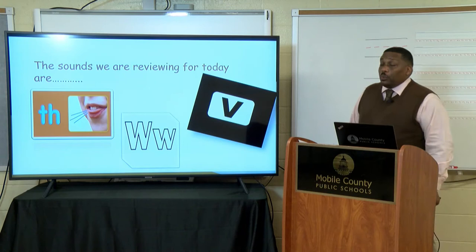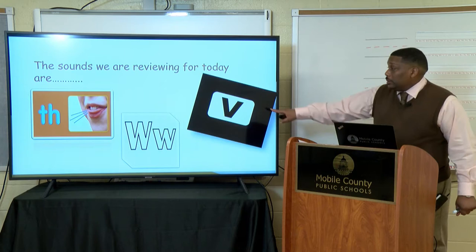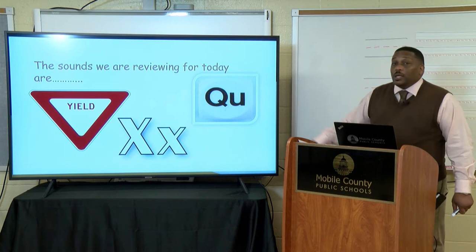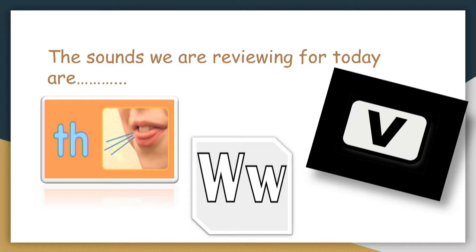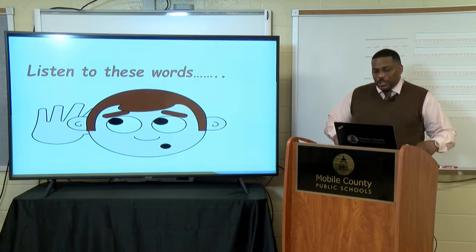The sounds we're reviewing today are: F — voiced and unvoiced — and V. Also W and V. Then Y, as in yield. Ks, that's our X sound. And Qu, as in queen. Let's go back: F and V, voiced and unvoiced. W. V. Y, as in yield. Ks, that's our X sound. And Qu, as in quilt. Great job.